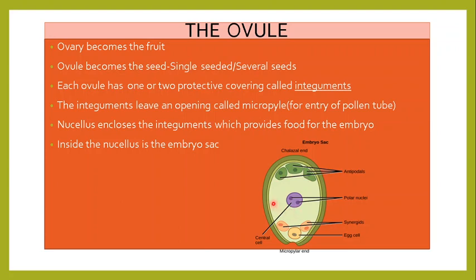So we have studied three main parts here: one is the outer integuments, then you have the nucellus, and then you have the embryo.